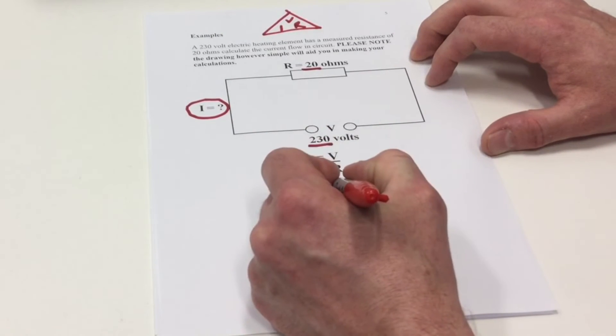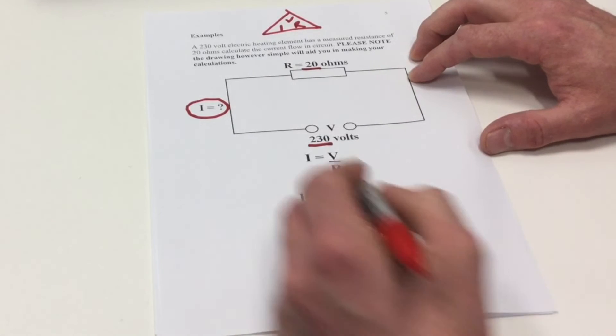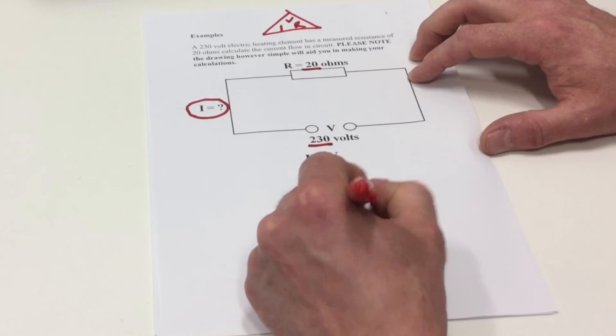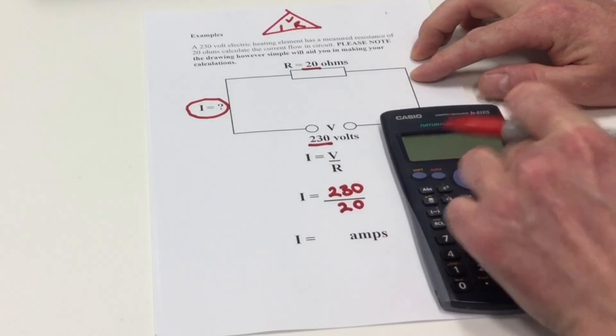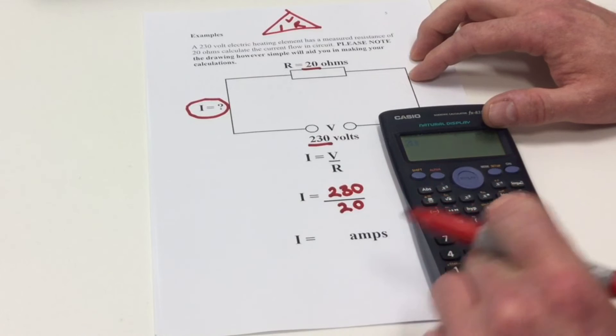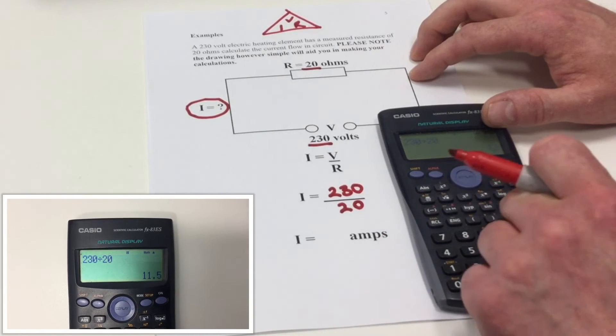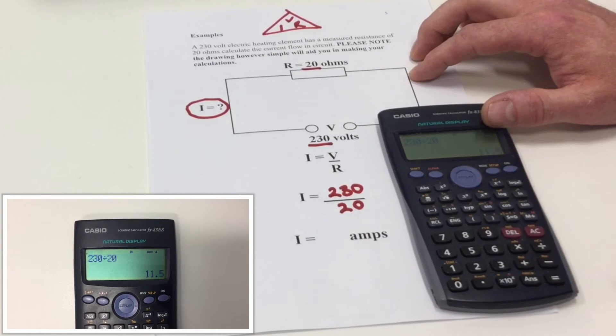Circuit voltage is 230 volts. Circuit resistance is 20 Ohms. Calculation is 230 divided by 20 is 11.5 Amps.